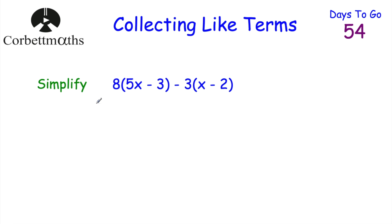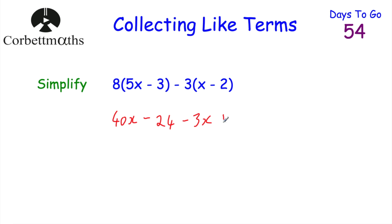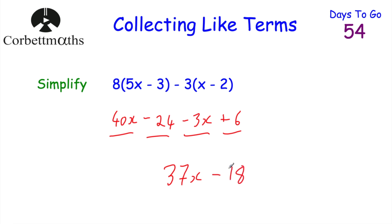Last question: simplify 8(5x − 3) − 3(x − 2). Expand the first bracket: 8 × 5x = 40x, 8 × 3 = 24, giving 40x − 24. Be careful with the second bracket — we're multiplying by minus 3. −3 × x = −3x. −3 × −2 = +6 (negative times negative is positive). Now collect like terms: 40x − 3x = 37x, and −24 + 6 = −18. The answer is 37x − 18.